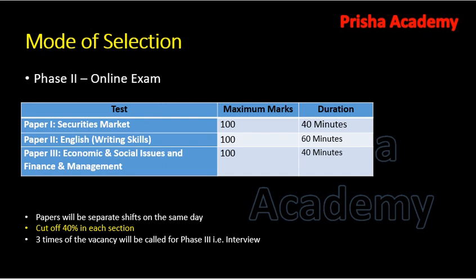The Phase 2 papers are held in separate shifts on the same day. The cutoff is 40% in each section — section-wise cutoff applies, not cumulative cutoff. You have to get at least 40% marks in each section to be eligible for the interview.